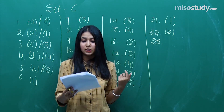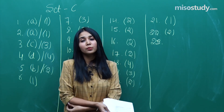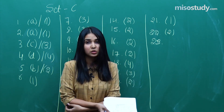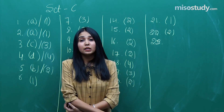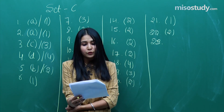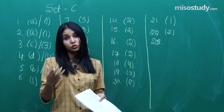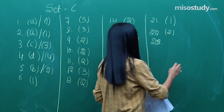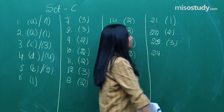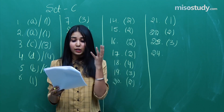Question number 23 was from some basic concepts of chemistry, based on stoichiometry. The correct option is option 3. Question number 24 was from the alcohols chapter — a really good question requiring deep knowledge of the concept. With only superficial knowledge you would not have been able to do it. The correct option for question 24 is option 2.